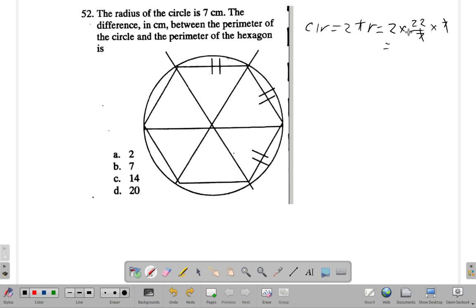7 cm to 7. 2 by 22 is 44. That's for the circle. What about the hexagon? The difference in perimeter we're looking at.